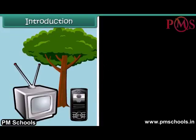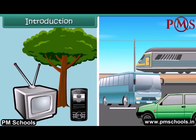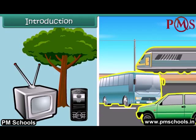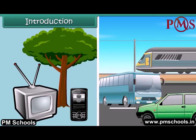Look around yourself and you will find objects of different kinds such as television, mobile, trees, cars, buses, trains etc. Objects such as television, mobile, trees etc. are static.